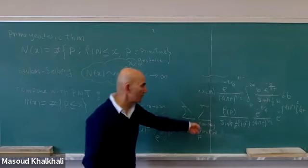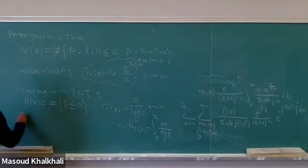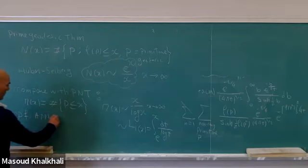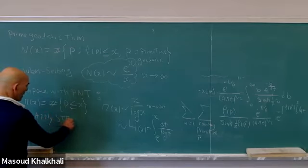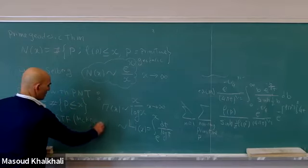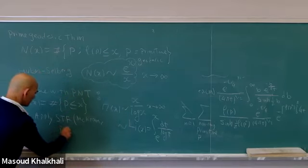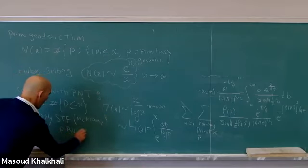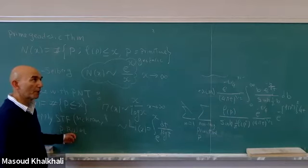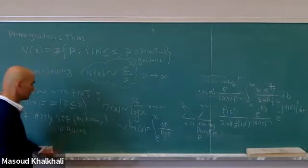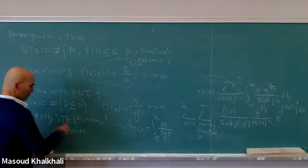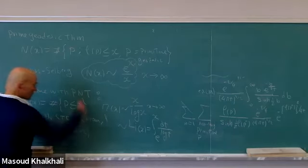They derived the prime geodesic theorem from this trace formula. You can read the proof in Iwaniec or in the very nice book by Peter Buser on spectral theory of hyperbolic surfaces, which is one of the best references for the compact case. I would say that although the Selberg trace formula itself needed a lot of work, it is perhaps less complicated than the original proof of the prime number theorem.